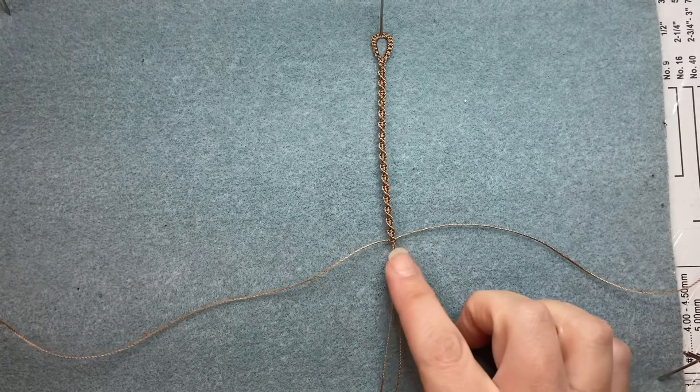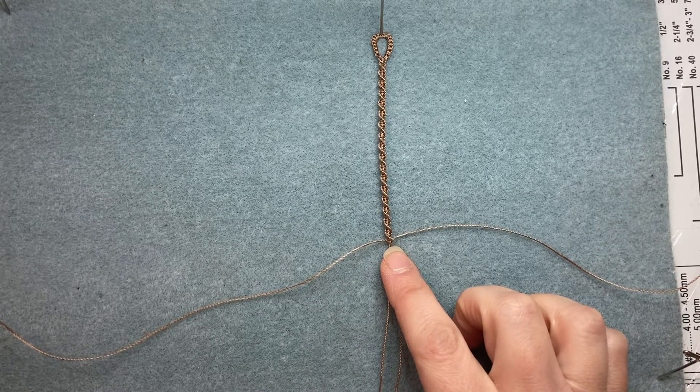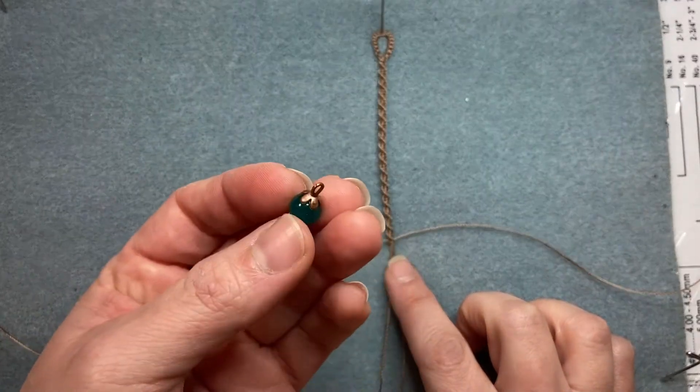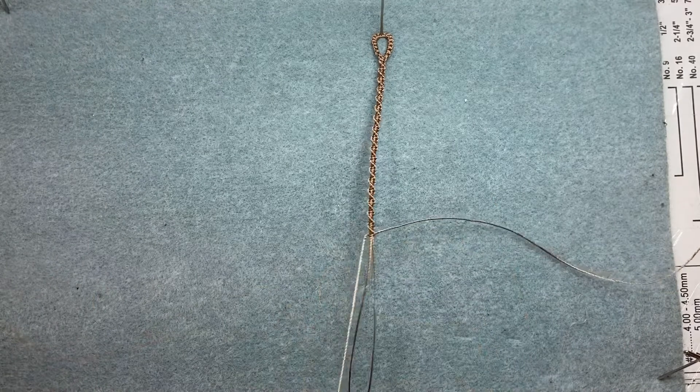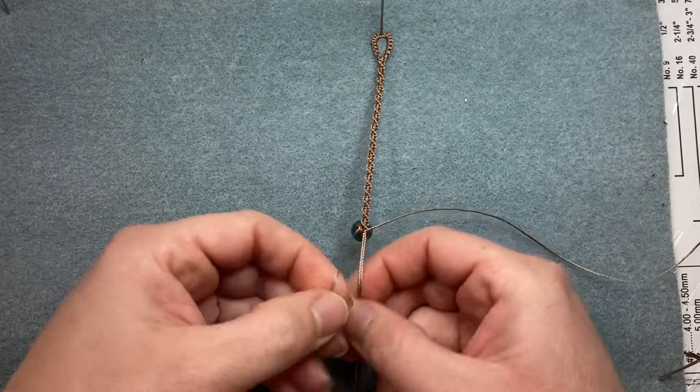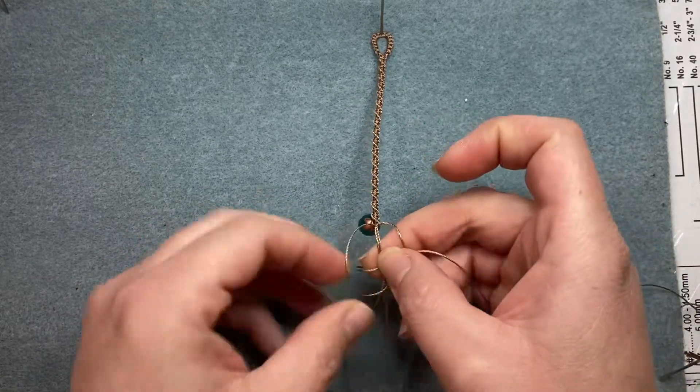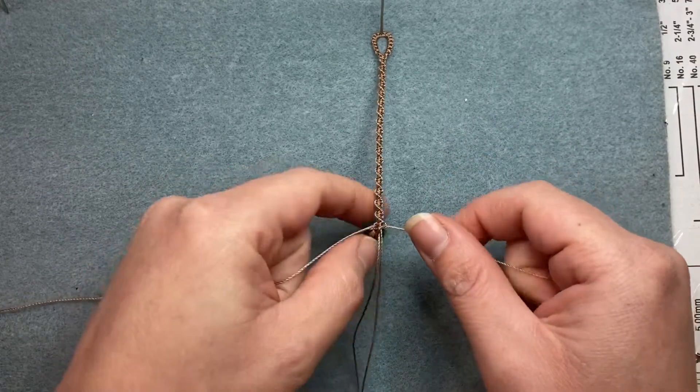Okay, so now we're at three inches, which is the halfway point of this six-inch bracelet. You're going to go ahead and grab your charm that you created earlier and you're going to add it to the left cord like so. And you're just going to create those spiral knots again for another three inches.